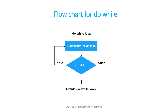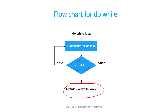This is a flowchart for do-while. Initially we enter the loop, the statements inside the loop execute, then the condition is evaluated. If the condition is true, the body of the loop executes again. As long as the condition is true, the loop continues. Once the condition is false, it exits the do-while loop.